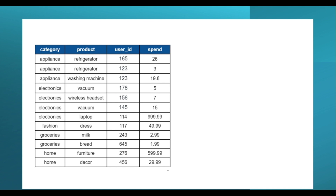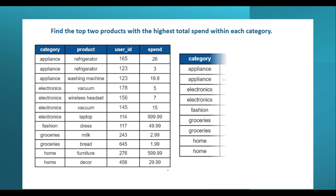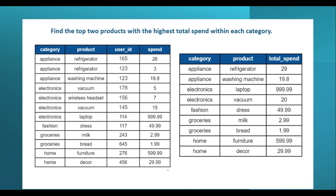You have been asked to find the top two products with the highest total spend within each category. The output will contain three columns: category, product, and total spend. To do that, you need to find the total spend of each product in each category. The categories are appliances, electronics, fashion, groceries, and home. For the appliance category there are two distinct products: refrigerator and washing machine.